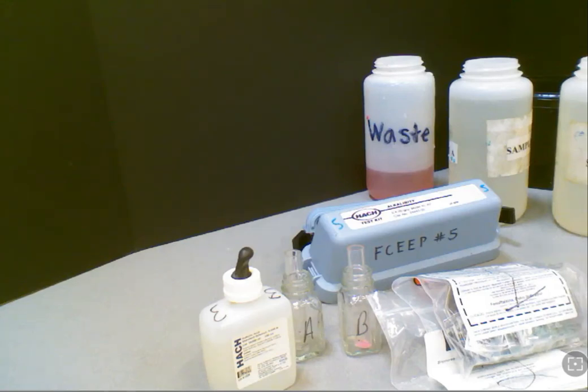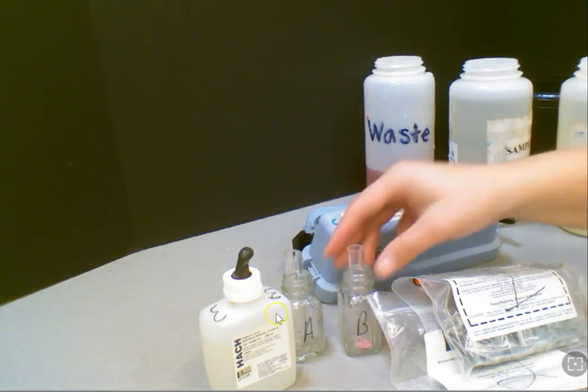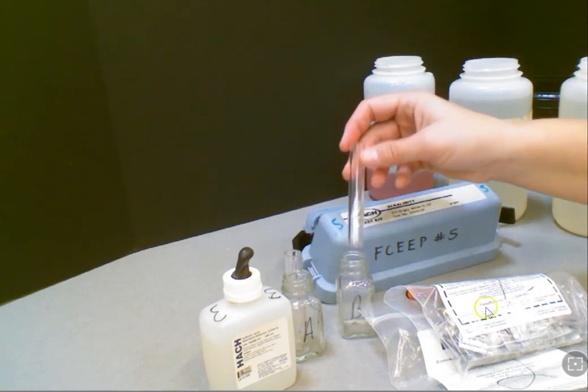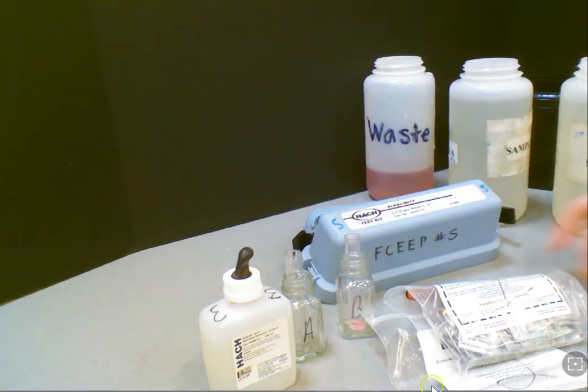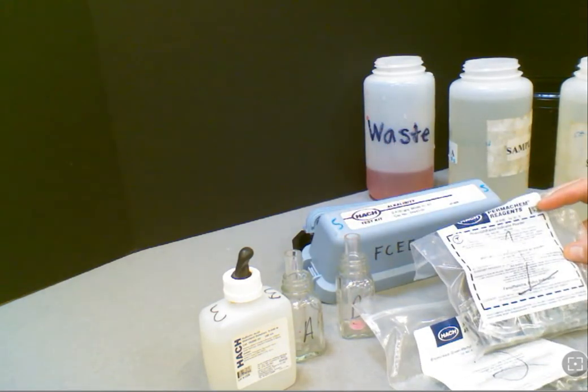So we're going to start with the alkalinity test now. When you unpack your materials, you'll notice you'll have some square mixing bottles, some test tubes for measuring, and you'll have three different chemicals here. We have them marked 1, 2, and 3, but as we get through the lab, we'll identify them as we use them.